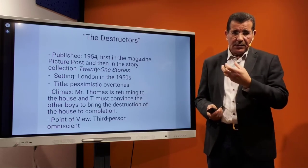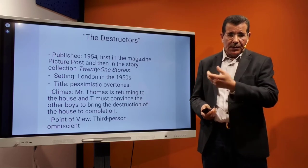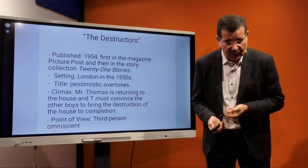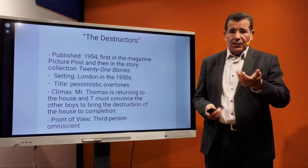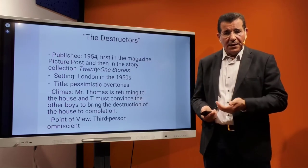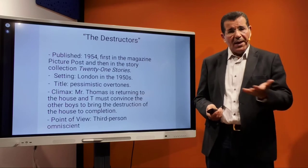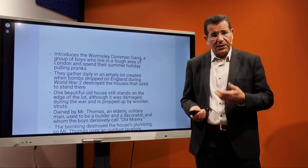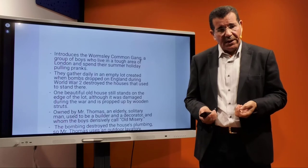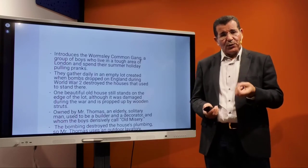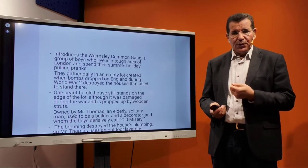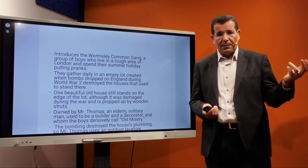The climax of the text involves Mr. Thomas, the owner of the house, returning home, and T must convince the other boys to bring the destruction of the house to completion. The story deals with a group of adolescents who gather and decide to destroy the house, which is indeed destroyed at the end. From the point of view of narration, it uses a third-person objective omniscient narrator, and introduces what is called the Wormsley Common gang.